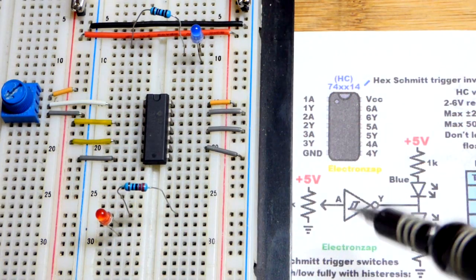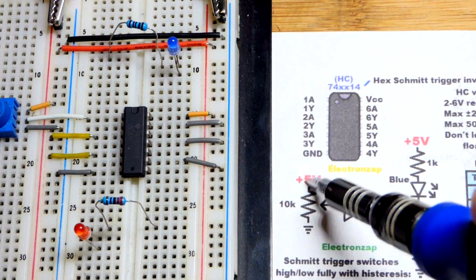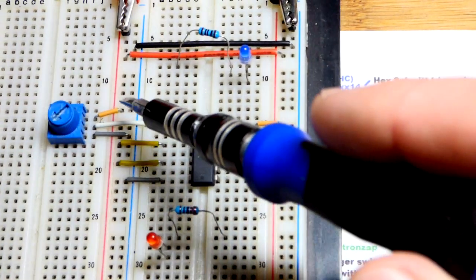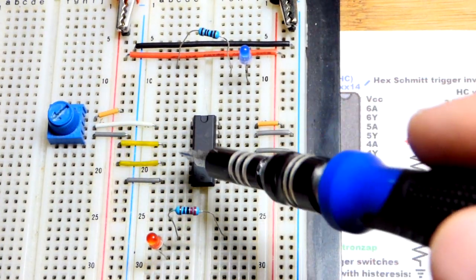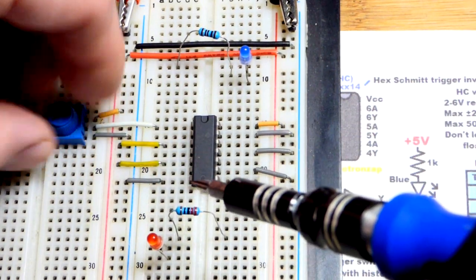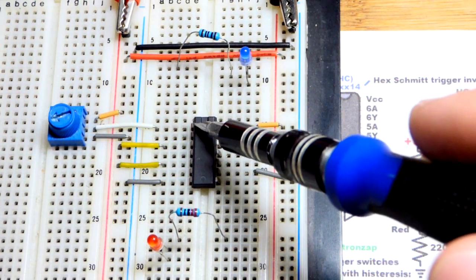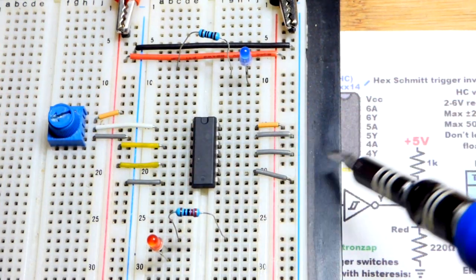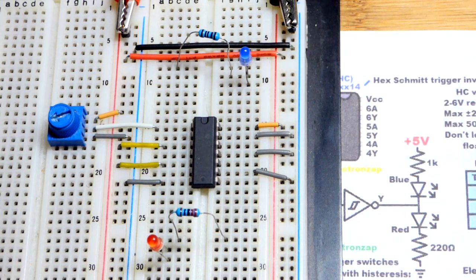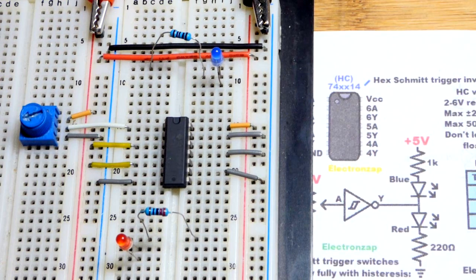And our signal is going to come from the trim pot, 10 kilo ohm trim pot. Both sides of the resistive element right there are to the power supply. And then the wiper, the part internally that connects to where I turn the dial there, the wiper is going to the input up there of the integrated circuit. There you can see, 1A right there.